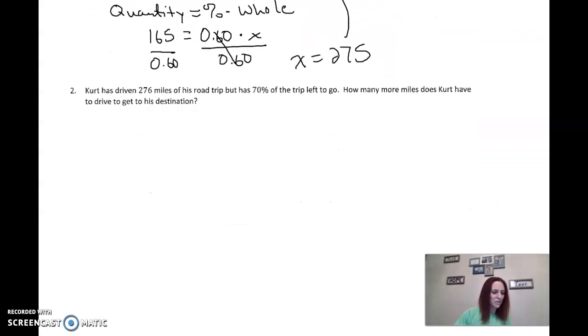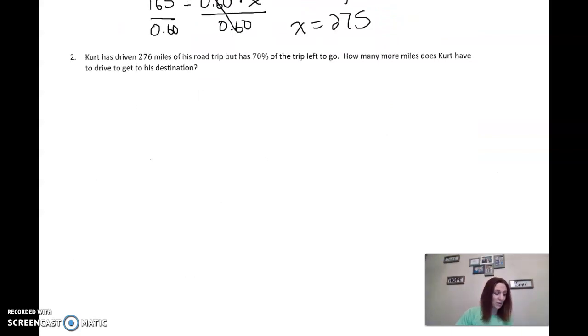Okay? Now, for the sake of time, I could totally draw a double number line here so you could see a visual. But I'm not going to lie, it's kind of long. And I don't think you probably want to listen anymore in this video. So let's jump right to the quantity part, the formula. So Kurt has driven 276 miles of his road trip, but has 70% of the trip left to go. So be careful. He has driven this much, but has 70% left. Well, if he has 70% left, what percent, what is 276? 276 is what percent of his trip? Well, if he's got 70 left to go, how much has he driven? 30, right? So 276 is 30% of his total miles.